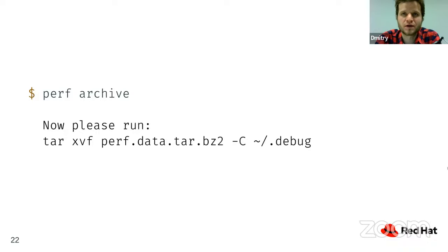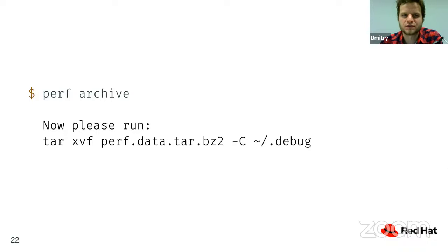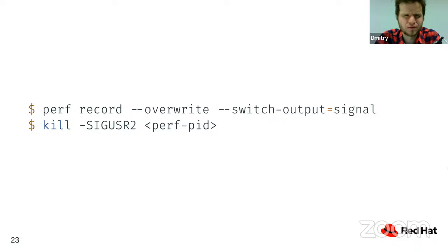To solve the broken symbol links issue, you can archive the collected data before pulling it to your local machine. Perf fetches all debugging information from across the system and provides a single tar archive you can analyze independently. Another very useful approach is running perf in a sort of background mode — more on that to come.